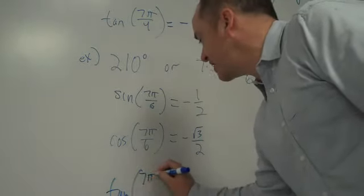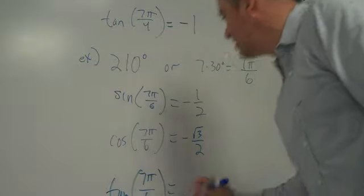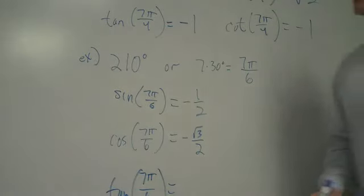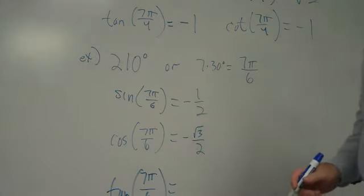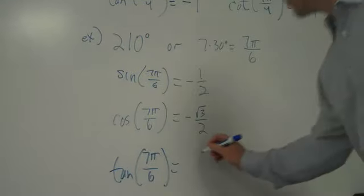Tangent is sine divided by cosine. What's a negative divided by a negative? Positive. What's the slope of this line? Also positive. Stay with me. What's... Positive root 3 over 3. Yeah. Positive root 3 over 3.